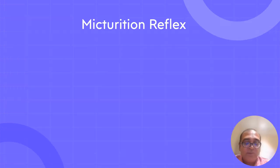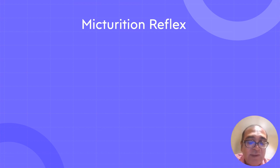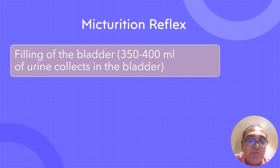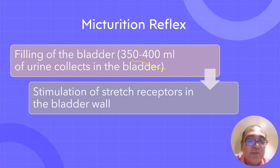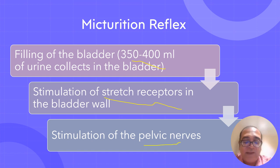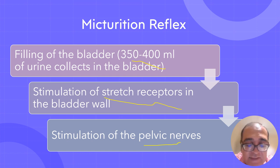Now the micturition reflex: when 100 to 150 ml of urine collects in the bladder, the micturition reflex begins in a weak manner. When 350 to 400 ml collects, strong micturition contractions begin. There is stimulation of stretch receptors in the bladder wall and stimulation of the pelvic nerves, which carry impulses to the spinal cord. Through efferent pelvic nerves, there is contraction of the bladder.